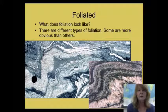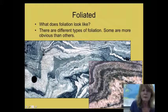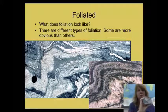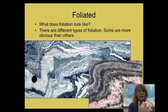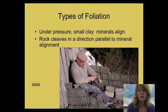What does foliation look like? There are many types of foliation. In the pictures here, some foliation is obvious — you can see bands of light-colored minerals and bands of dark-colored minerals in these rocks, and those bands might be flat or somewhat folded. This layering can be a very obvious form of foliation. Other foliation types are not quite as obvious, so let's walk through the common types of foliated metamorphic rocks.